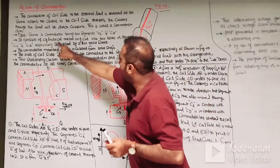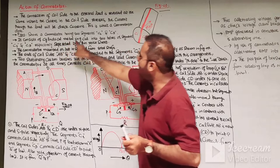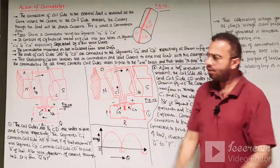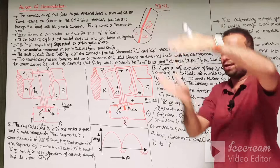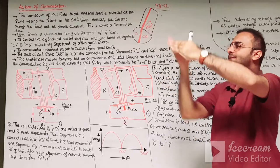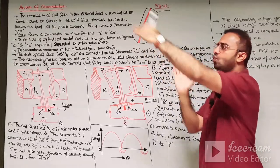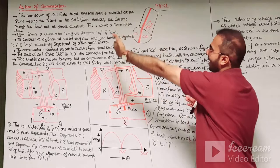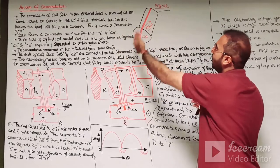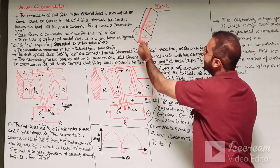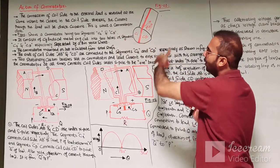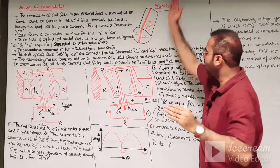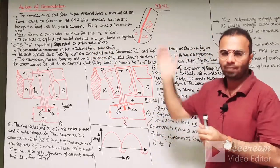The commutator has 2 segments, C1 and C2, both separated by mica. It consists of a cylindrical metal ring cut into 2 halves. The first half is the C1 segment and the second segment is C2, separated by a thin mica sheet. Mica is an insulating material.